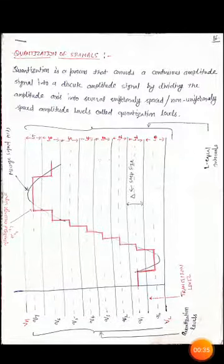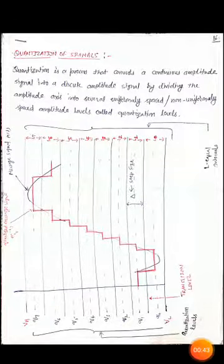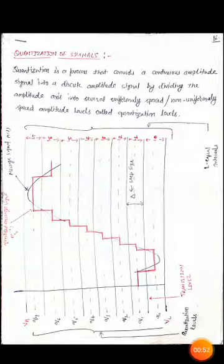Our continuous time signal x(t) is converted into x(nTs). That is, the time axis — small t — is converted into a number of time intervals denoted by n into Ts. So that is sampling. But in that case, in the discrete signal, the continuous amplitude axis remains continuous. That is why it is called a discrete signal.